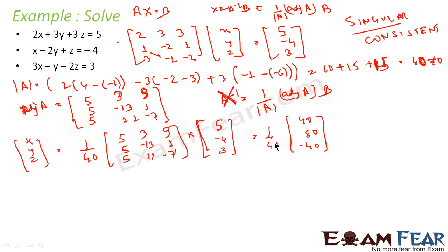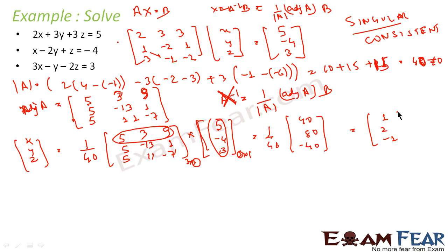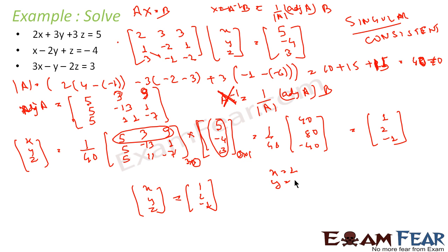After multiplying, we get [x, y, z] = [1, 2, minus 1]. Comparing these two matrices using equality of matrices, we get x = 1, y = 2, and z = minus 1, and that is our answer. I solved this equation using determinants and matrix by converting the system into matrix equation AX = B, then using X = A inverse B.